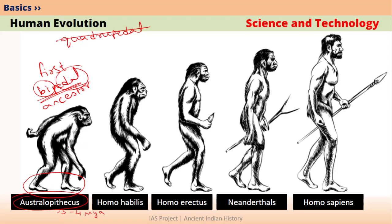With evolution, Australopithecus became Homo habilis. You can see that Homo habilis is walking even straighter compared to Australopithecus. Homo habilis was living roughly 2 to 3 million years ago. Then, Homo habilis evolved into Homo erectus. Erect means simply upright, so Homo erectus was the true straight-walking human ancestor. Homo erectus existed roughly 1 to 2 million years ago.